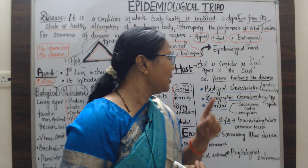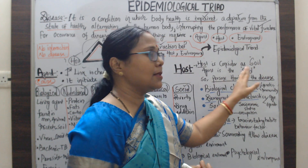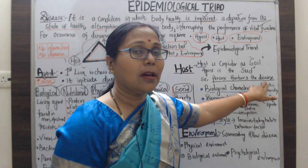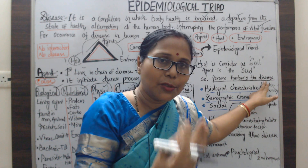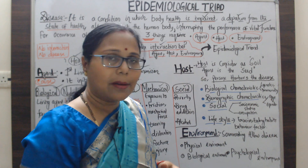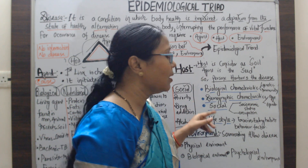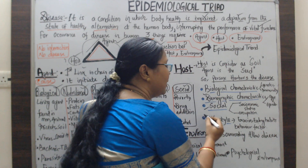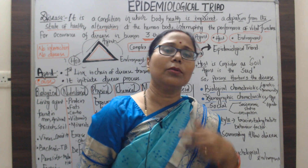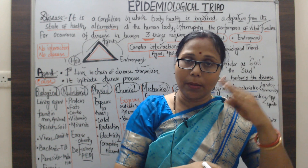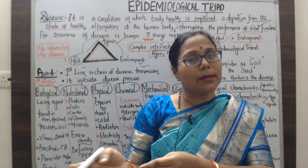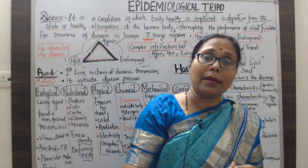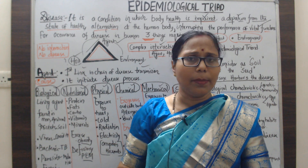Similarly, the host provides a comfortable zone for the agent to grow in the body. The host is defined as the person who harbors the disease. Host characteristics are categorized into: biological characteristics, demographic characteristics, social characteristics, and lifestyle. Biological characteristics include genetic makeup and genetic inheritance from parents — for example, genetic diseases like thalassemia, or parental diabetes and hypertension increasing the risk in the next generation.